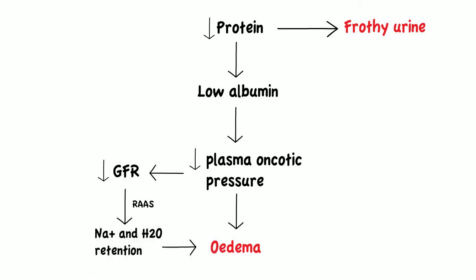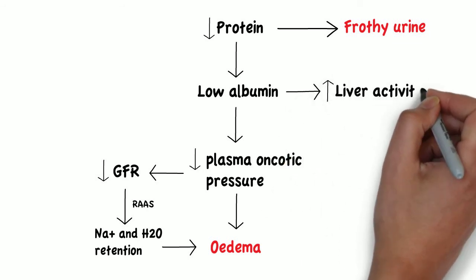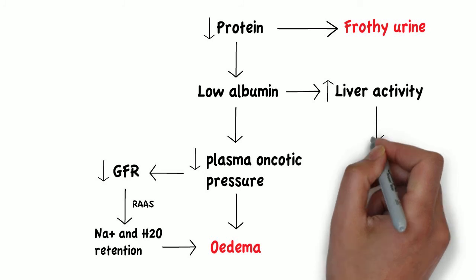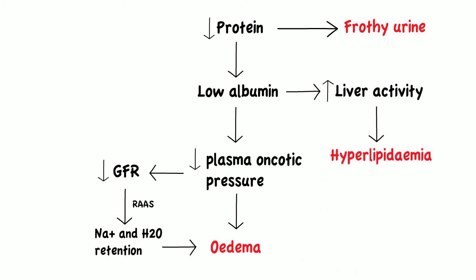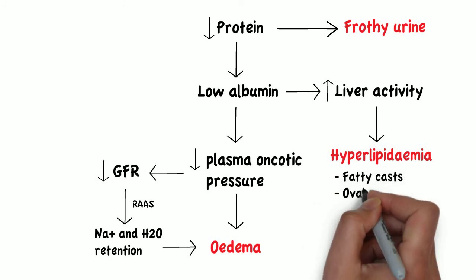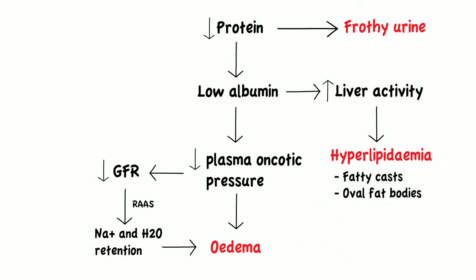As you lose albumin, the liver tries to replace it, so there is an increase in liver activity which leads to hyperlipidemia — very high levels of total cholesterol and low density lipoprotein. This leads to two findings in the urine: fatty casts and oval fat bodies.